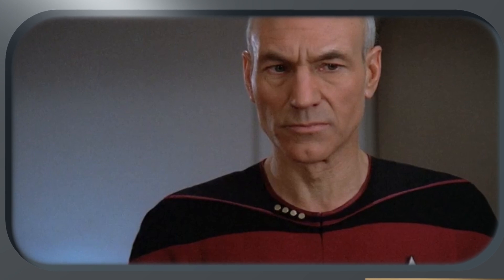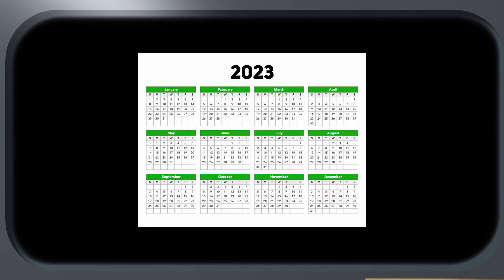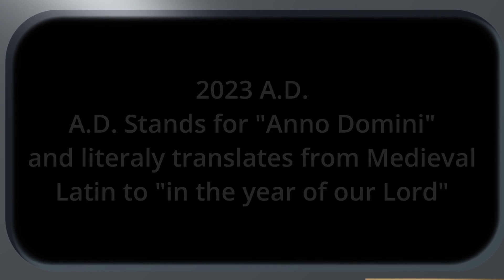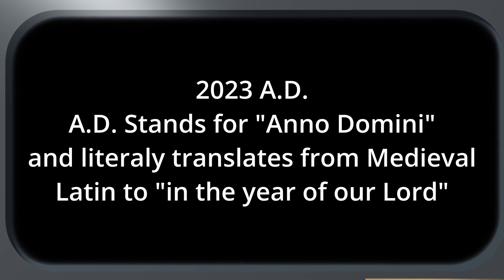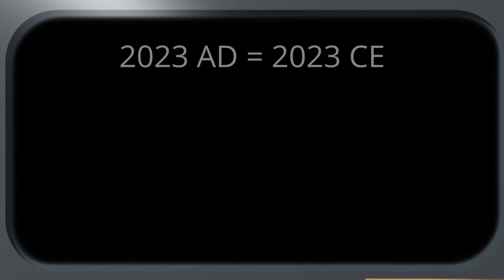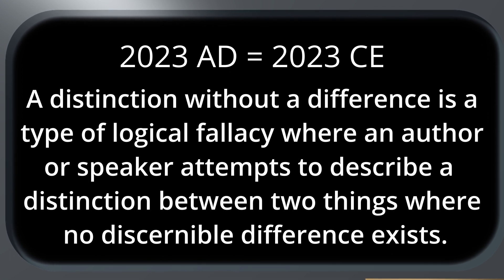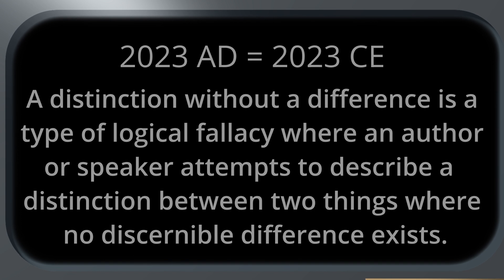That solves the 'one stardate equals one day' question, but doesn't quite resolve why one year seems to equal one thousand days. Then it dawned on me: we're all assuming they're using an Earth calendar. But even on Earth there are multiple calendars in active use. While the western world takes for granted the current year is 2023, that is a specifically western and specifically Christian concept — the '2023' represents the year of our Lord 2023.